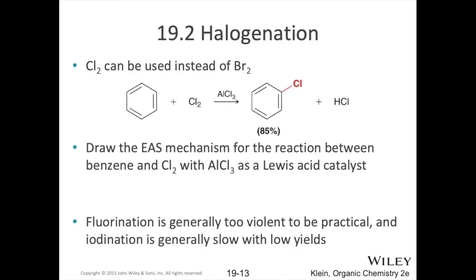In addition to a bromo product, we can also make a chloro product. If we use aluminium chloride instead of iron-3-bromide, and chlorine instead of bromine, we can swap out a chlorine atom for a hydrogen. Very similar mechanism as we just saw with bromine. Instead, we have chlorine instead of bromines and an aluminium center instead of an iron center. We get the chloro-substituted product and HCl is a byproduct. The aluminium chloride is catalytic here.